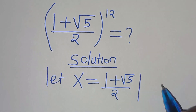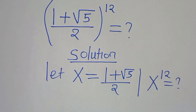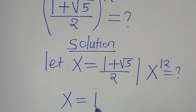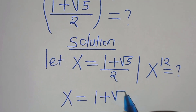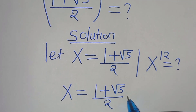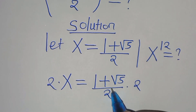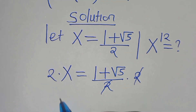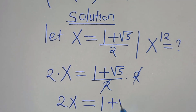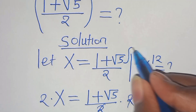This implies that we need to determine what is x to the power of 12. Now since we have x which is 1 plus square root of 5 divided by 2, the first step here is to multiply both sides by 2, so that we have 2x equals 1 plus square root of 5. Let's call this equation 1.